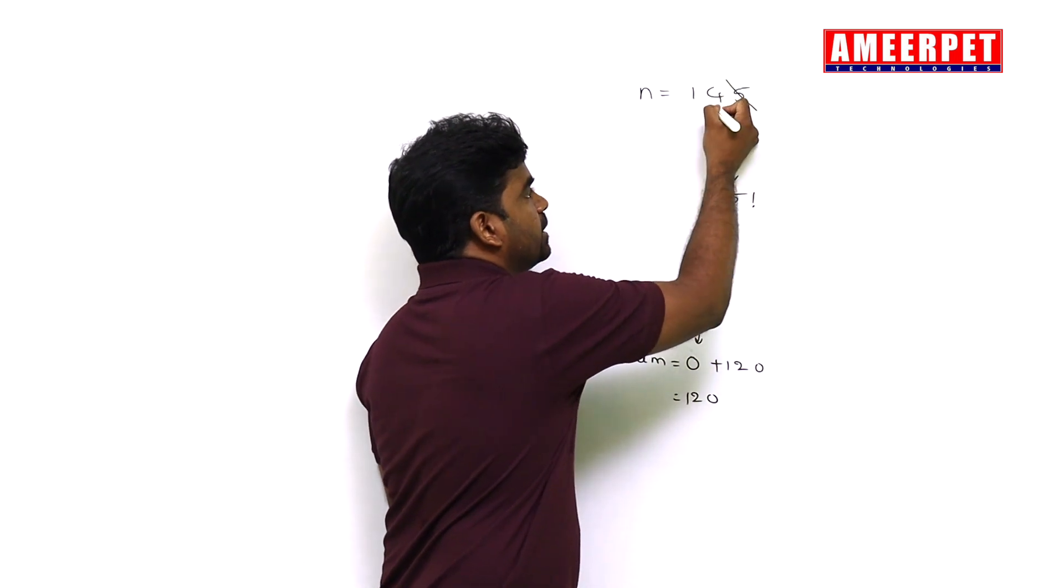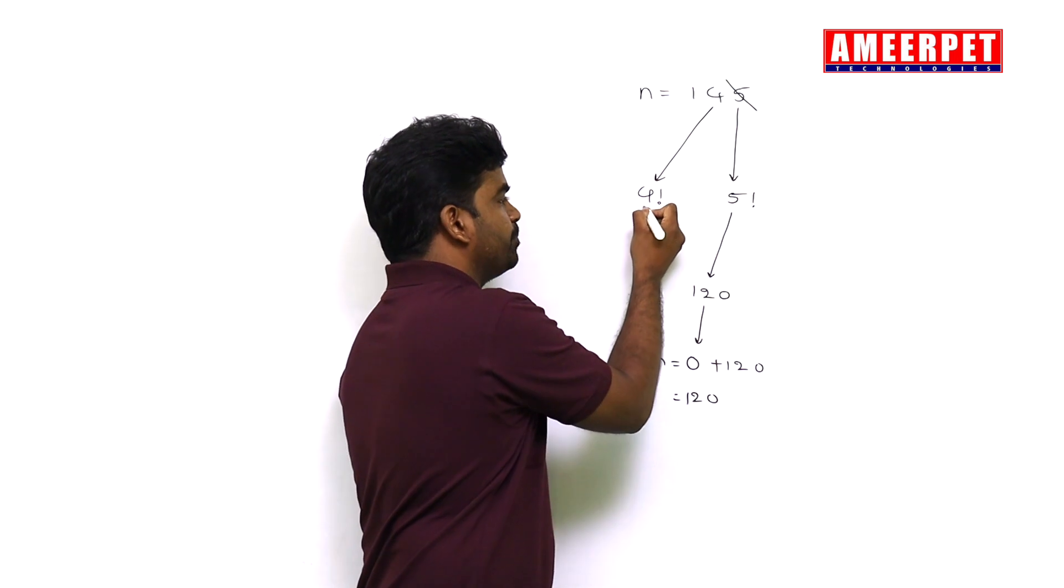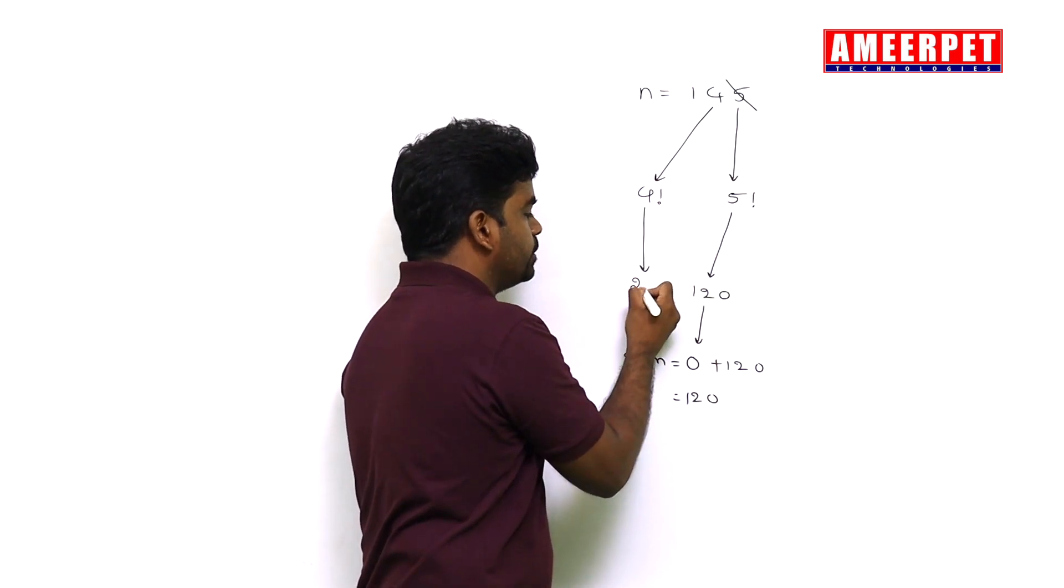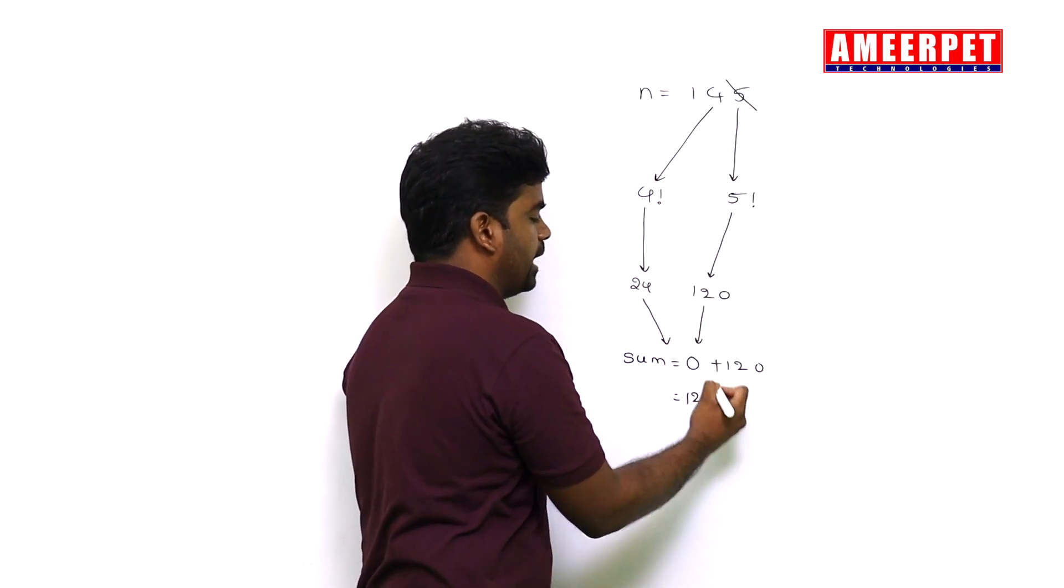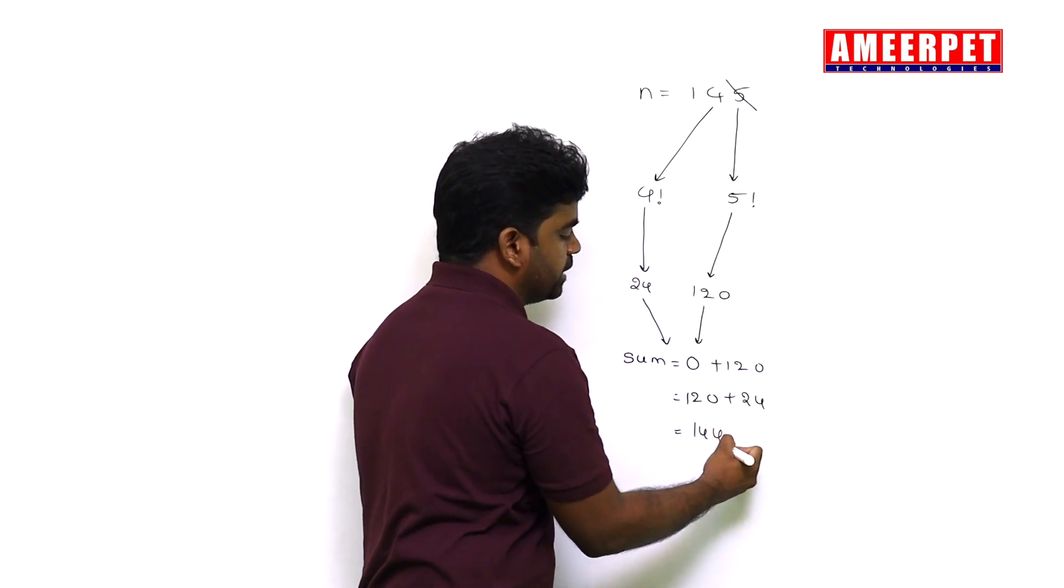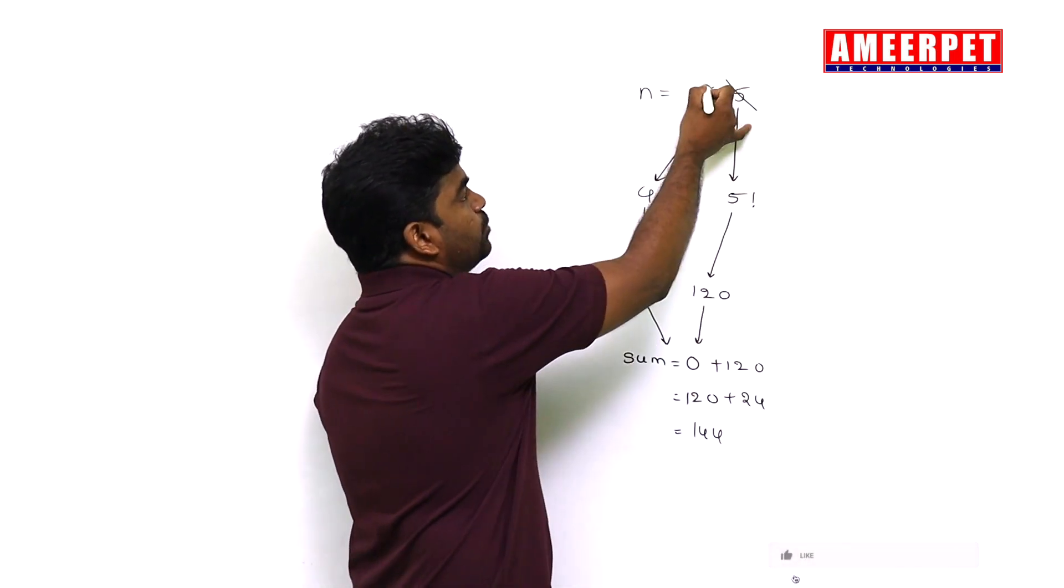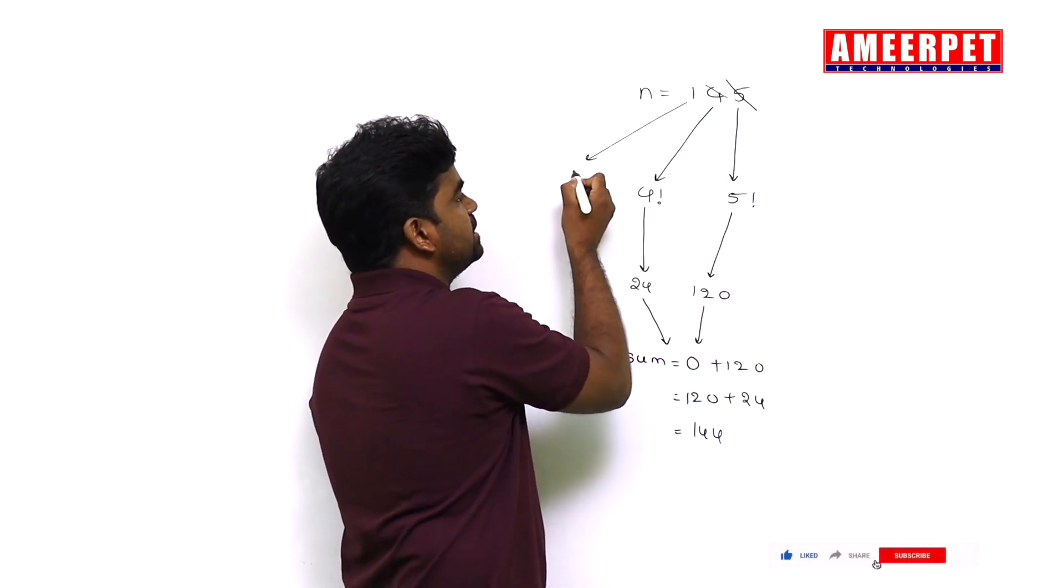Next, get the next digit 4 and find the factorial. Here the value is 24. Add 120 plus 24, which is 144. After working with the digit, again remove the digit.